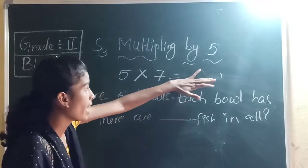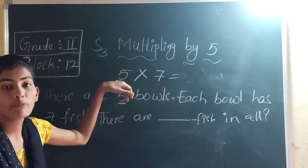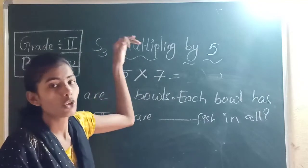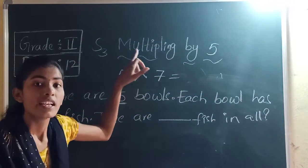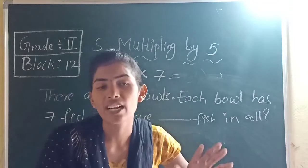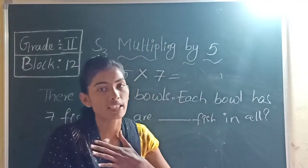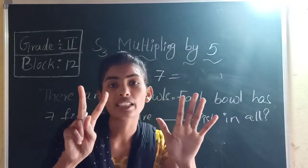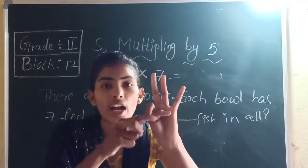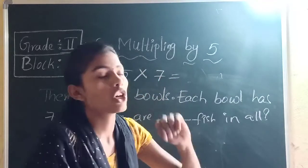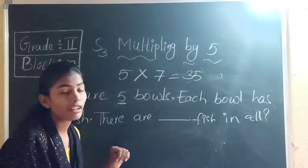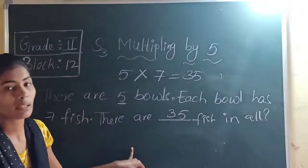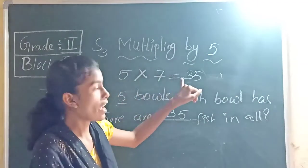To find the answer, skip count 5 seven times — or reverse it and skip 5 seven times since 5 skip count is easy. Take 7 fingers: 5, 10, 15, 20, 25, 30, 35. There are 35 fish in all. So the multiplication sentence is 5 into 7 equals 35.